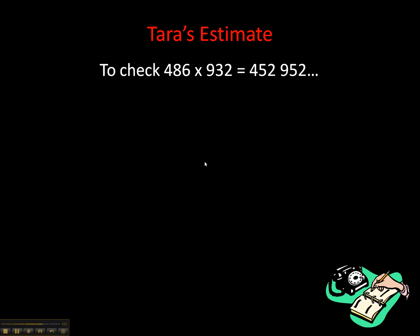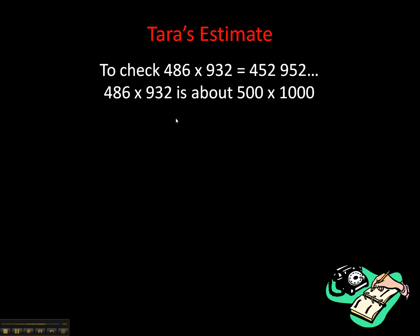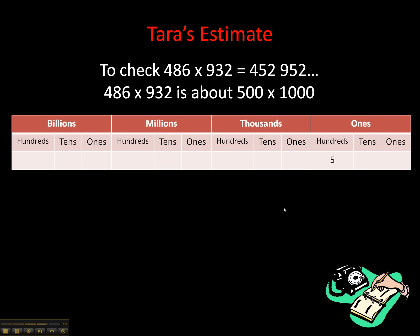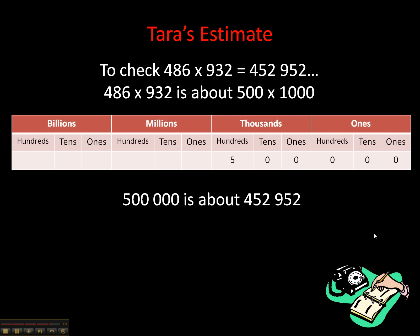Tara takes yet another approach. She rounds both numbers up — 486 to 500 and 932 to 1000 — and multiplies these nice round numbers. Using her place value chart, she places 500 in the ones period, then multiplies by 1000 by moving it over three spots, adding three zeros. She finds that 500,000 is indeed close to 452,952, confirming Eric's answer is reasonable.